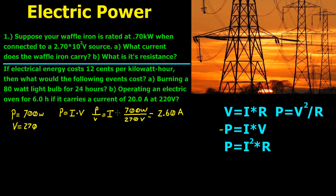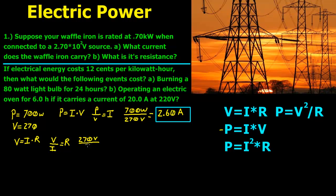So for part 1 that's what it looks like. For part 2 — what is its resistance? We use voltage equals I times R, and rewrite that as voltage divided by current equals resistance. The voltage is 270 volts, divided by the current we calculated of 2.60 amps, which leaves us with a resistance in ohms.